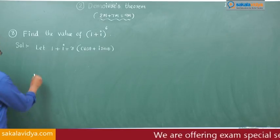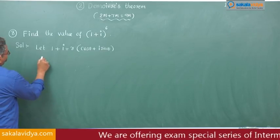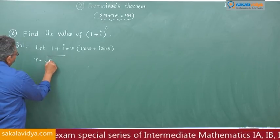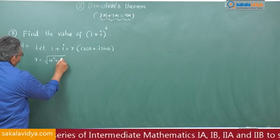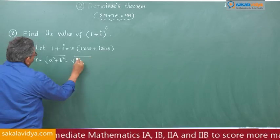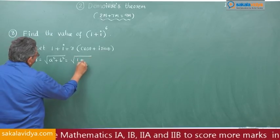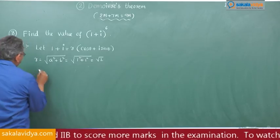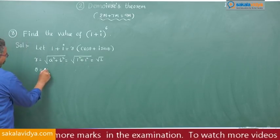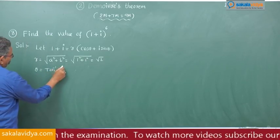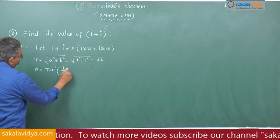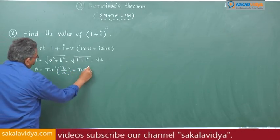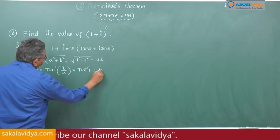Here, r = √(a² + b²) = √(1² + 1²) = √2. And θ = tan⁻¹(b/a) = tan⁻¹(1/1) = tan⁻¹(1) = 45 degrees.